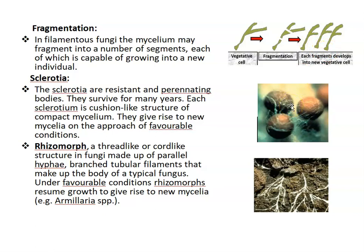Next is sclerotia. Sclerotia are resistant and perennating bodies that can survive for many years. Each sclerotium is a cushion-like structure of compact mycelium. Sclerotia give rise to new mycelia when conditions are favorable. Then, rhizomorphs. Rhizomorphs are thread-like or cord-like structures in fungi made up of parallel hyphae — branched tubular filaments that make up the body of the fungus. Under favorable conditions, rhizomorphs resume growth and give rise to new mycelia. Example: Armillaria species.